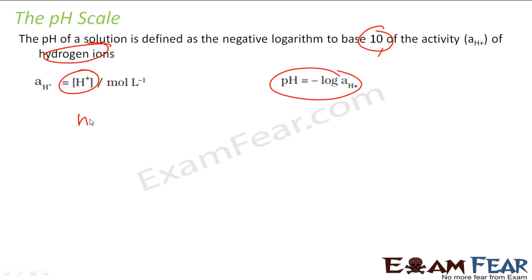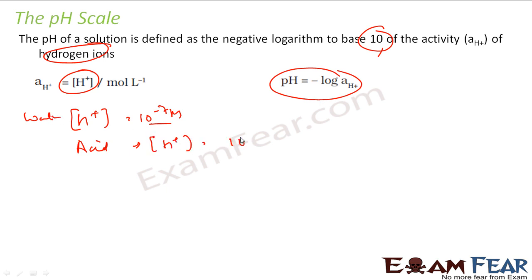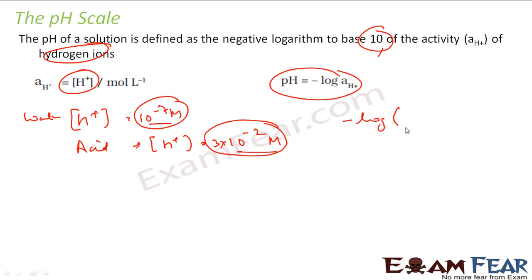If you see, the H plus ion concentration of water is 10 to the power minus 7 moles per liter. And let's suppose we have some other acid - in some acid, the H plus ion concentration is 3 into 10 to the power minus 2 moles per liter. So writing these things is very difficult. 10 to the power minus 2 - it's a very complex thing. So what this chemist did was, instead of writing in this form, he writes the whole thing as minus log of this value. So for water, minus log of 10 to the power minus 7 gives 7.